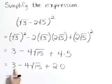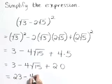Now combine your like terms. 3 plus 20 is 23 minus 4√15, and stop here. These two terms aren't alike, so we can't combine them. The simplest form is 23 - 4√15.